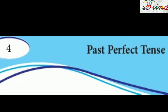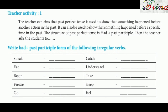In the previous episode we have seen present perfect tense — using 'have' and 'has'. Now in past perfect tense, we use only one word: 'had'. Whether singular or plural, we use only 'had'. Past perfect tense is used to show that something happened before another action in the past. It can also be used to show that something happened before a specific time in the past. The structure of past perfect tense is: had + past participle.